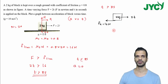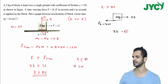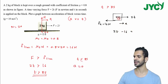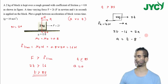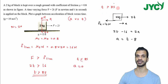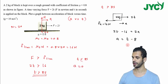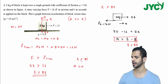Now we draw the free body diagram and write the equation: 2t minus 16 equals mass into acceleration, which is 2a. So the value of acceleration comes out to be a equals t minus 8. This is the equation of acceleration when time is greater than 8 seconds.